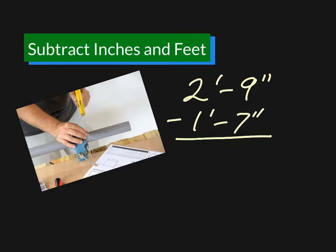First you subtract the inches: 9 minus 7 is 2, and then you subtract the feet: 2 minus 1 is 1. So 1 foot 2 inches.